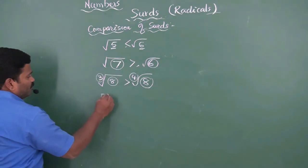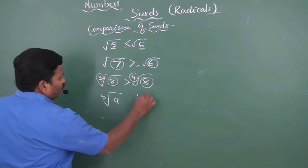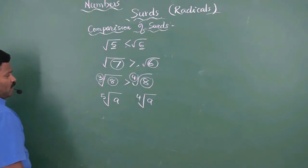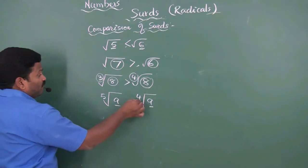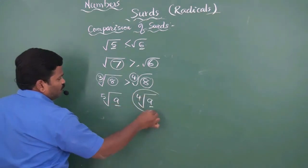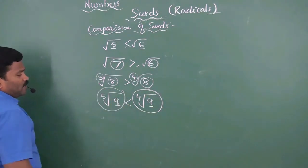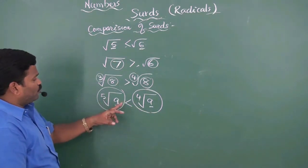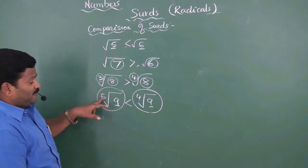For radicals with the same radicands, we compare their orders — lesser order means greater value, and bigger order means lesser value. For example, which is bigger: 4th root 9 or 5th root 9? Since radicands are the same and 4 is less than 5, the 4th root 9 is the bigger side. 4th root 9 is bigger than 5th root 9 because the order of this side is less.